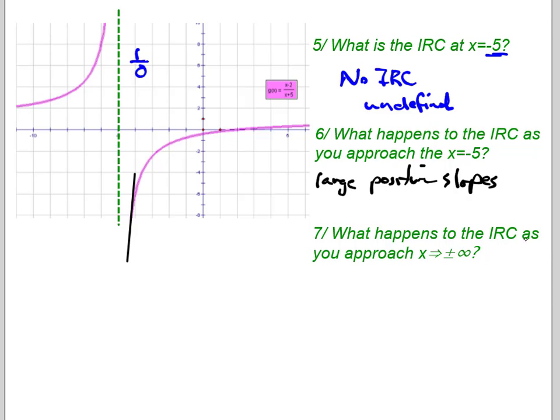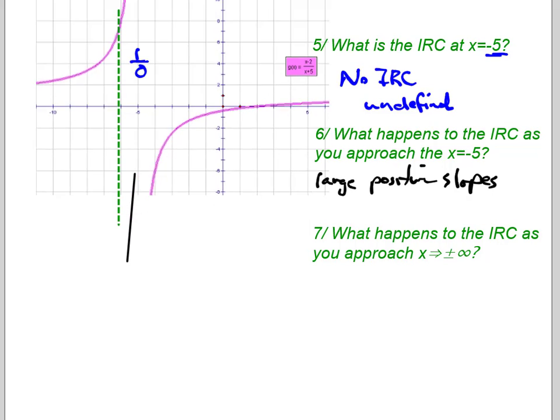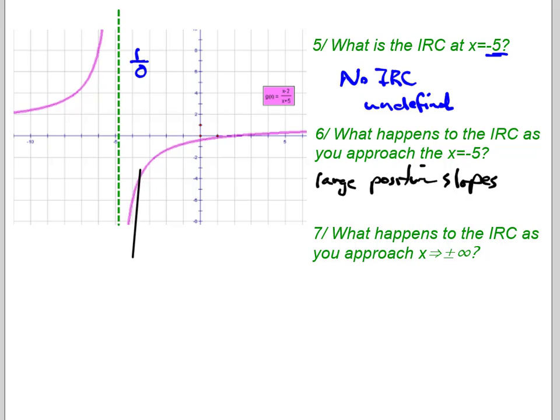So what happens to the IRC as you approach X going to positive or negative infinity? So this is our end behavior concept again. So what happens to the IRC if we take this and we start moving this black line towards the outside? Well, it's getting flatter compared to when we were moving towards the asymptote. Getting flatter still. And if we extended this far enough, you'd start to see our IRC starts to head towards zero.